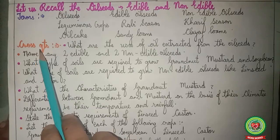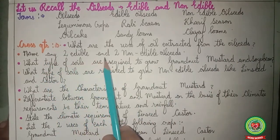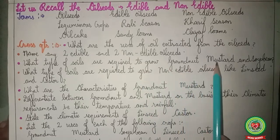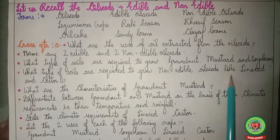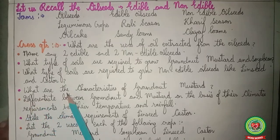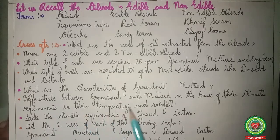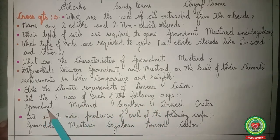Now let us go through various cross questions: What are the uses of oil extracted from oil seeds? Name any two edible and two non-edible oil seeds. What type of soils are required to grow groundnut, mustard and soya bean? What type of soils are required to grow non-edible oil seeds like linseed and kester? What are the characteristics of groundnut and mustard? Differentiate between groundnut and mustard on the basis of their climatic requirements — temperature and rainfall. State the climatic requirements of linseed and kester. List two uses of each of the following: groundnut, mustard, soya bean, linseed and kester.